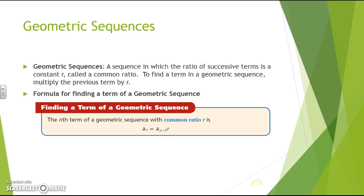With a geometric sequence, it's a sequence in which the ratio of successive terms is a constant r, called a common ratio. To find a term in a geometric sequence, you're going to multiply the previous term by r. It's very important to remember that you multiply the previous term by r.